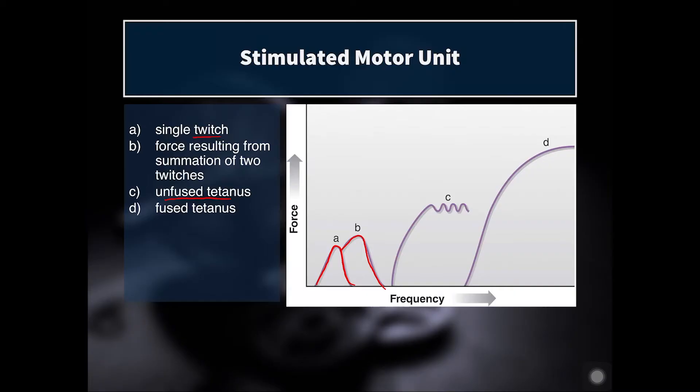Unfused tetanus produces a wave-like pattern in force production — you can still sort of see the individual twitches and don't develop very much force. But if you have a rapid enough signal down the alpha motor neuron, then you get what's called fused tetanus and you can develop the full force capacity of that motor unit. So while each individual action potential cannot stimulate subsets of the muscle fibers, if we have a higher frequency of twitches, we can actually produce more force in that muscle.